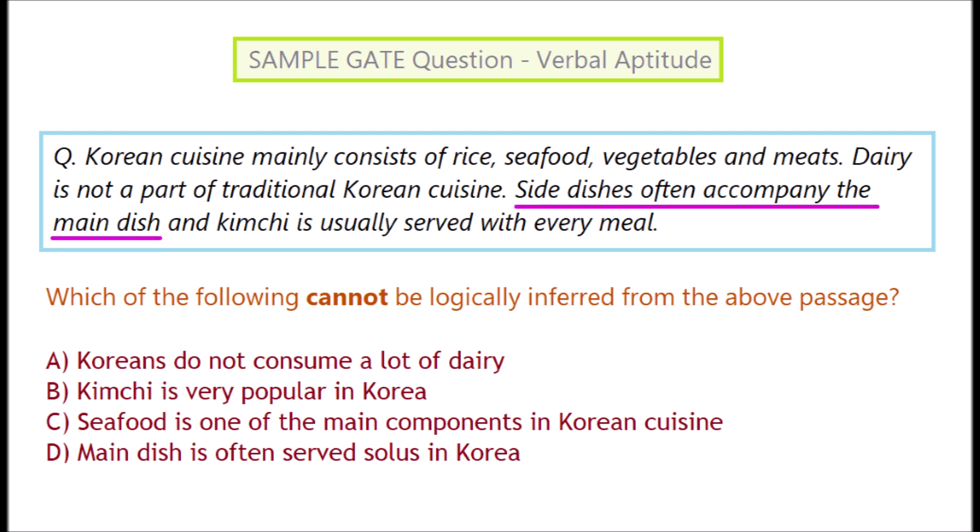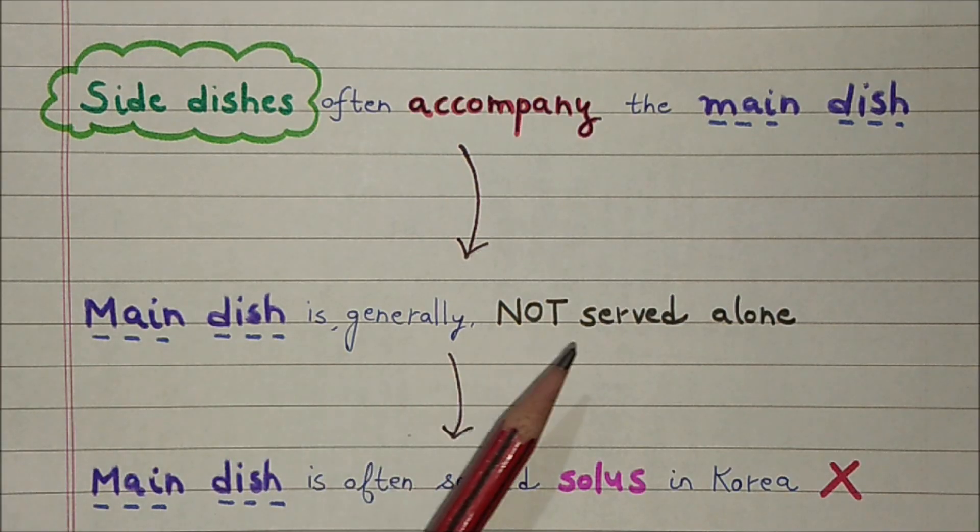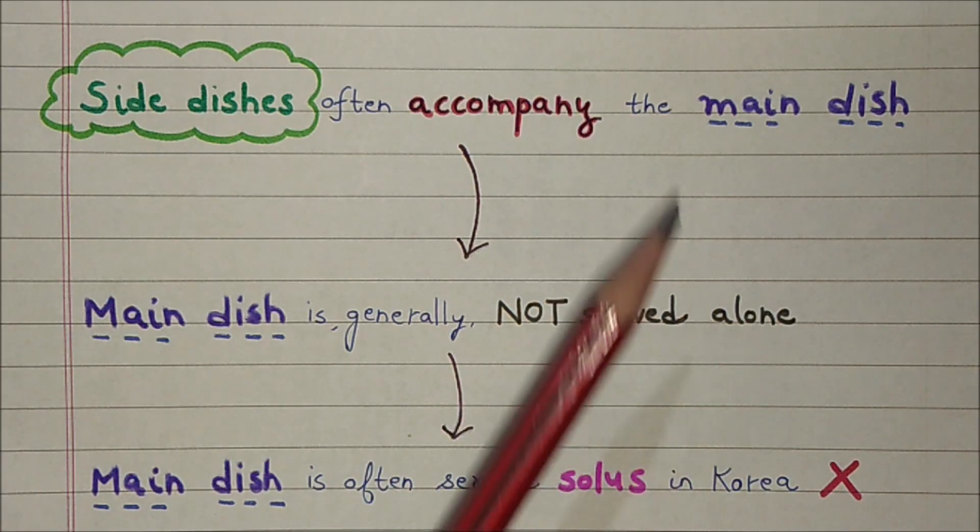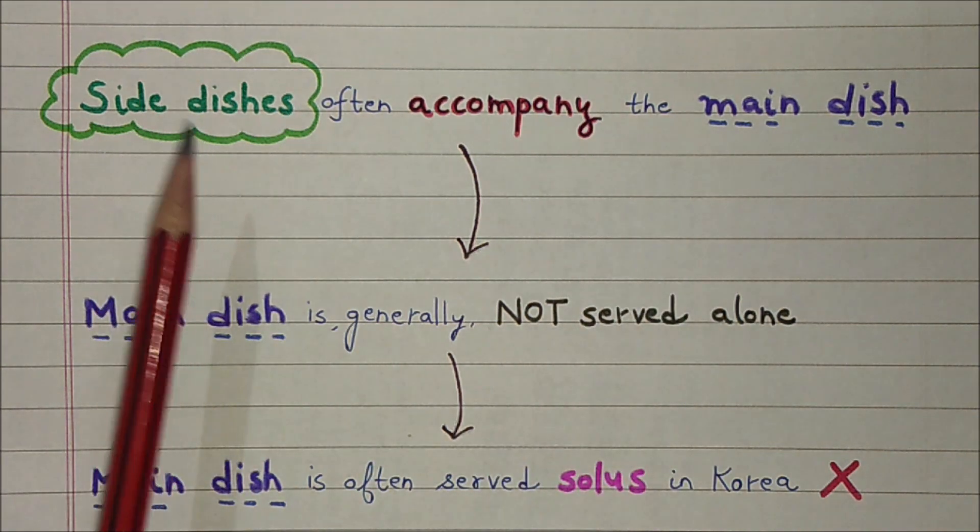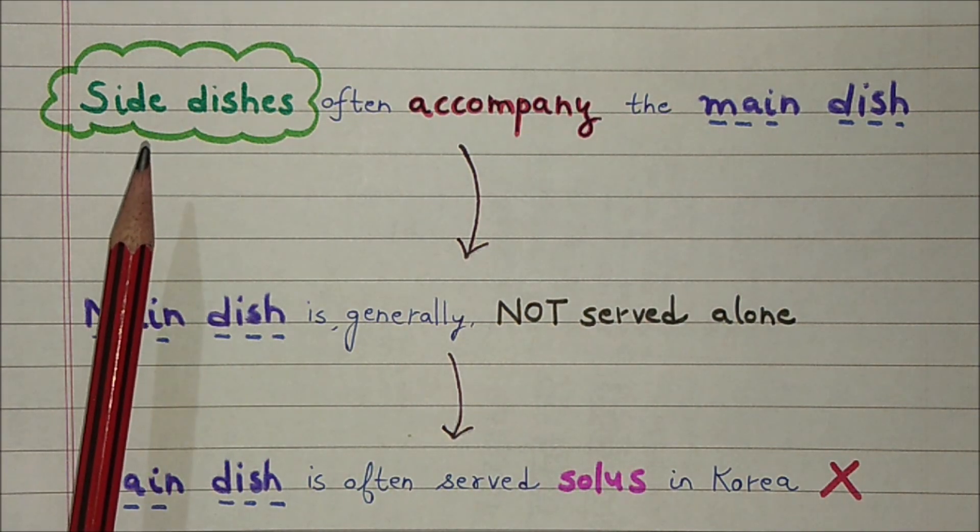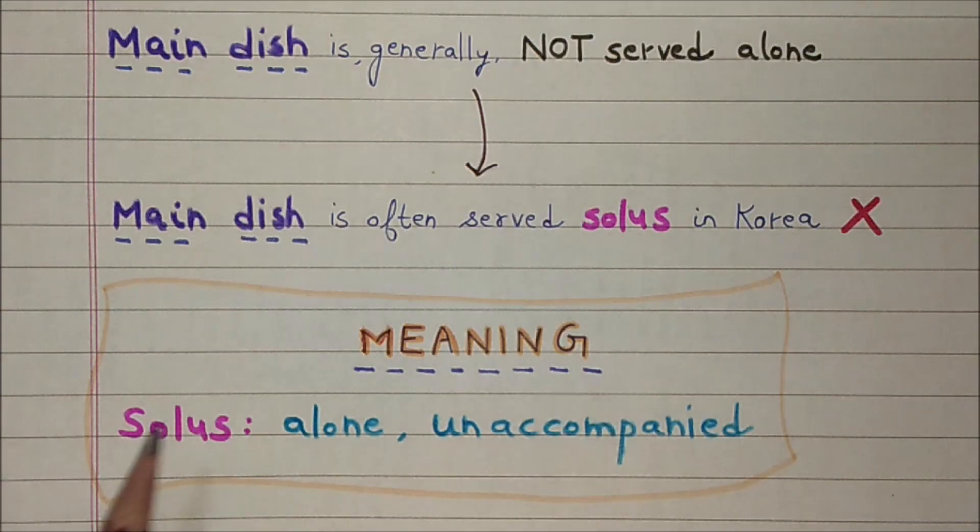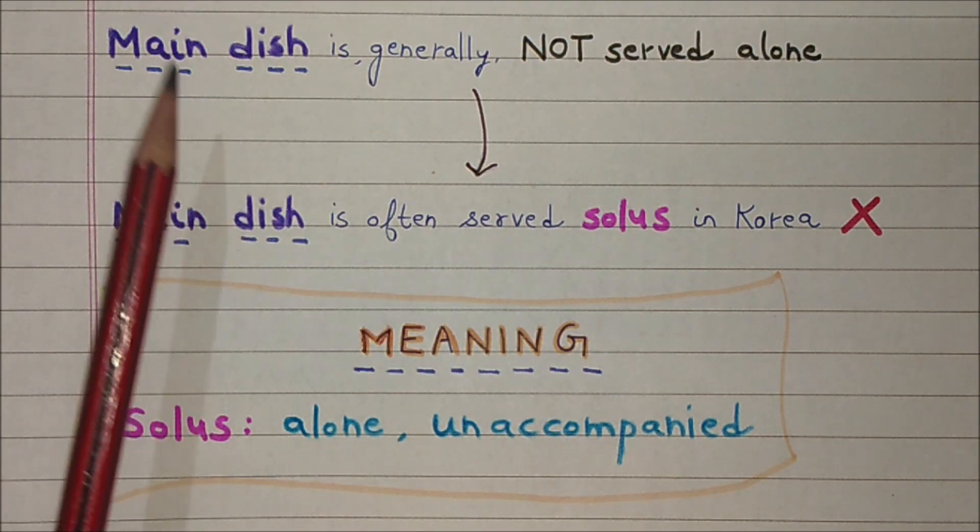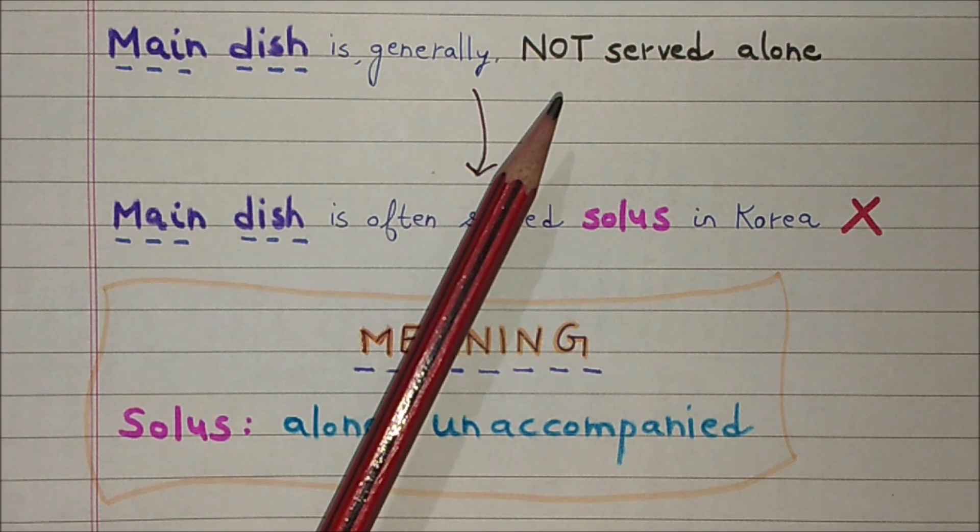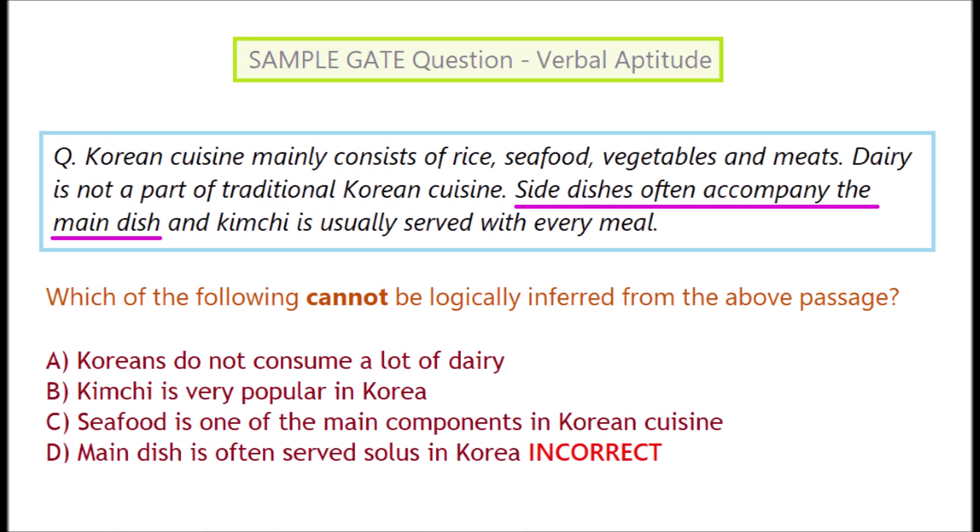Paragraph mein likhha hai ki side dishes often accompany the main dish. Yarni main dish ko generally akalye serve nahi kiya jata hai. Main dish ke saath mein zyadha tar kuch side dishes bhi serve ki jati hai. So, main dish is often served solus in Korea is incorrect. Kyunki solus matlab alone or unaccompanied. Lekin hume pata hai ki main dish ko akalye serve nahi kiya jata hai. Is liye option D is incorrect inference. So, correct answer is option D.